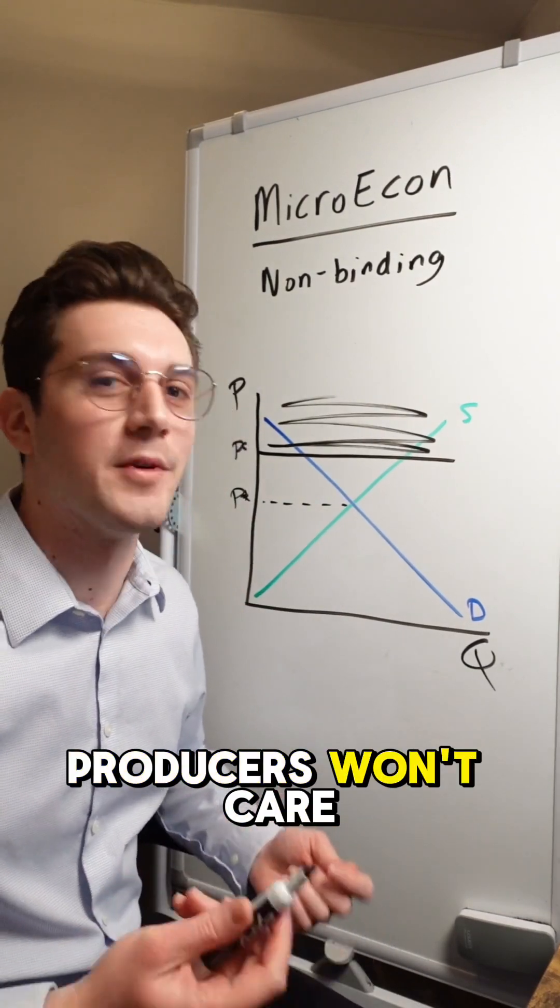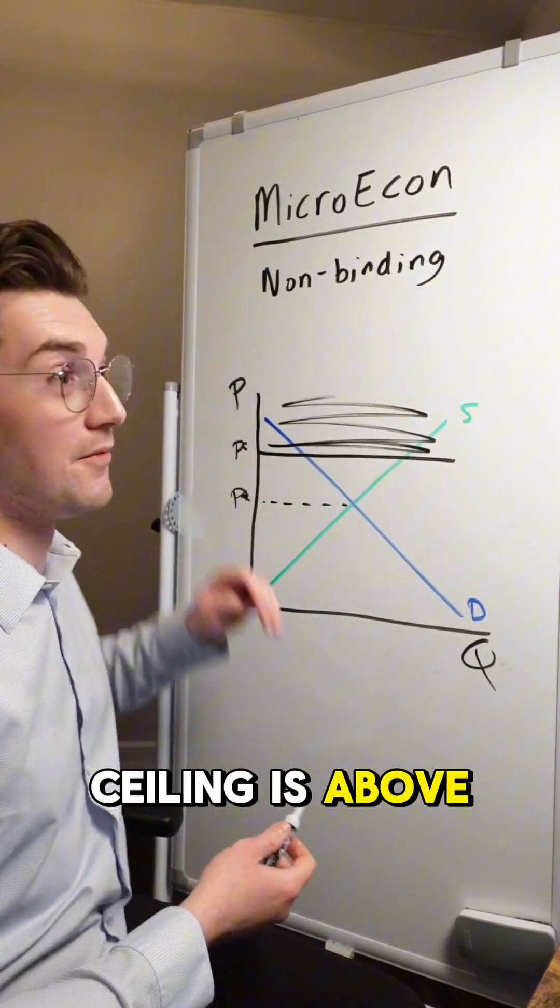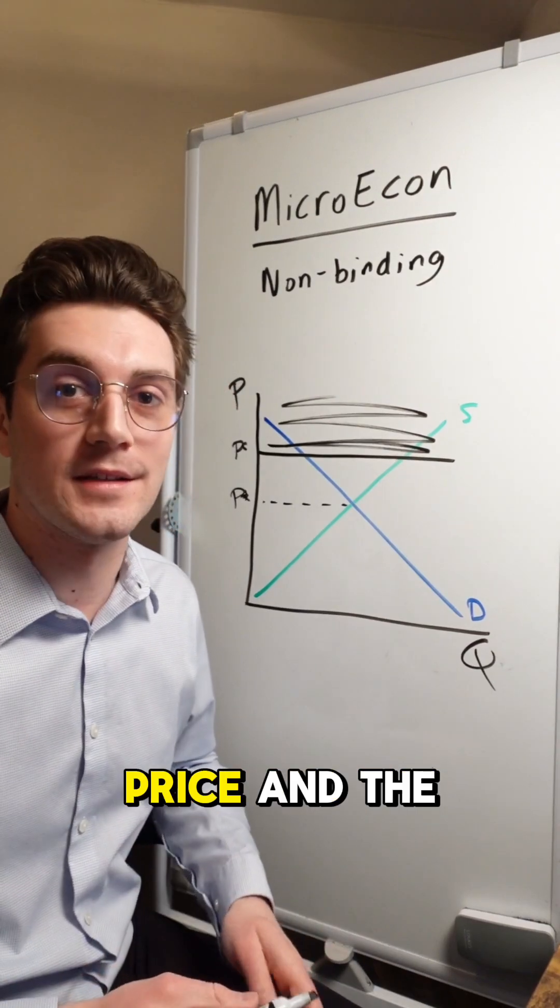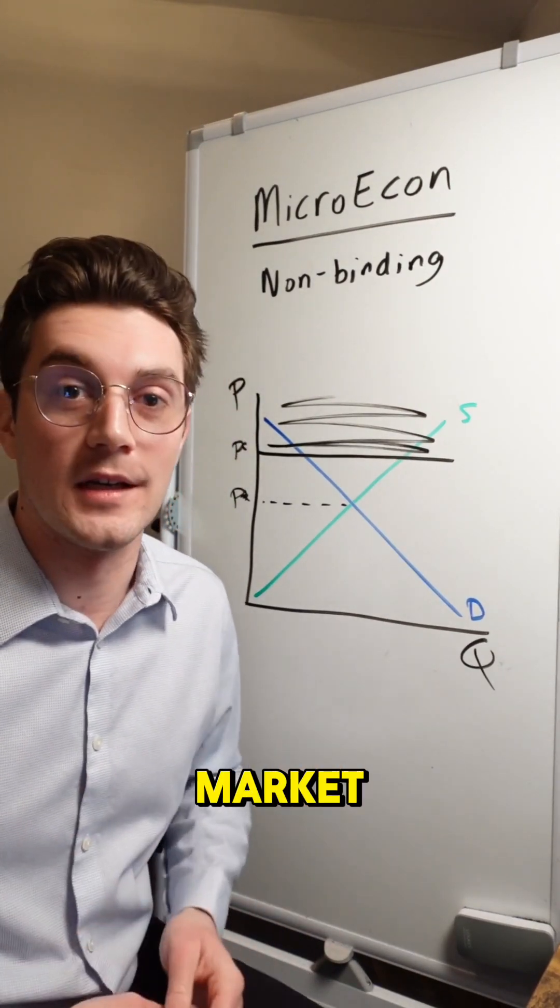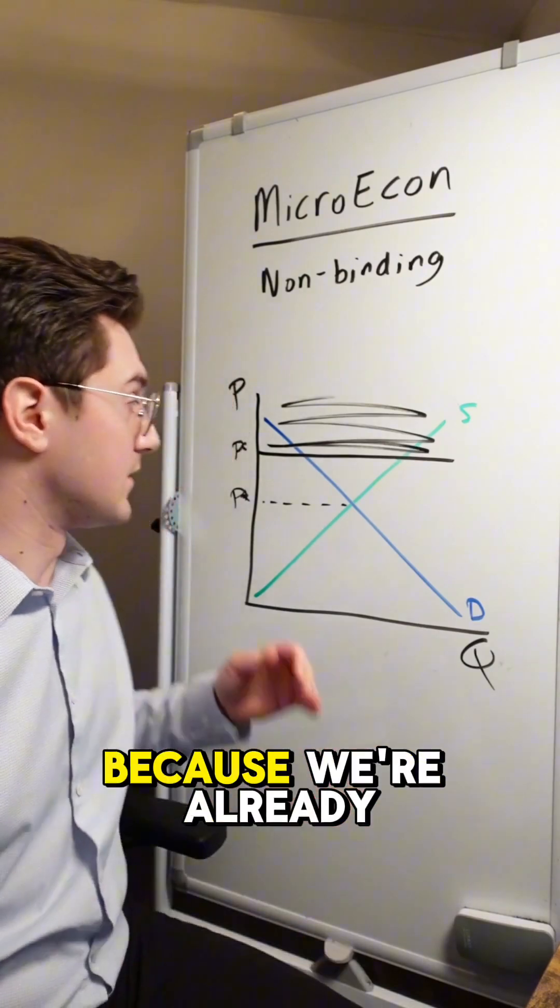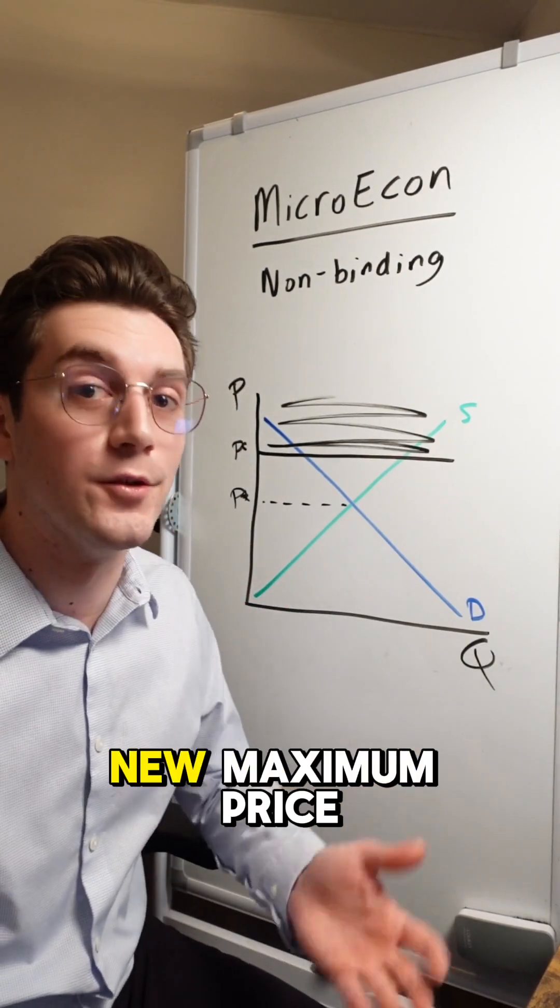So consumers and producers won't care that this price ceiling is above their already existing equilibrium price. And the price ceiling will not have any impact on the market. It's not going to cause a shortage because we're already operating below that new maximum price.